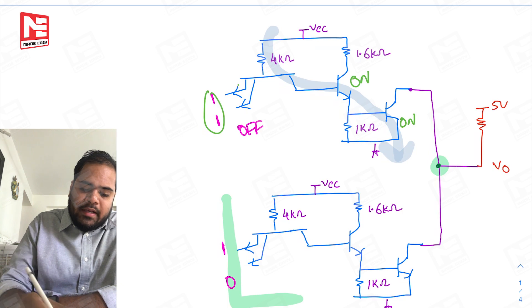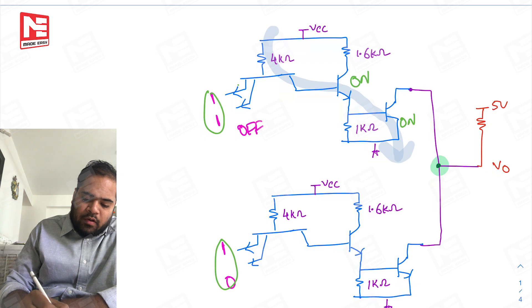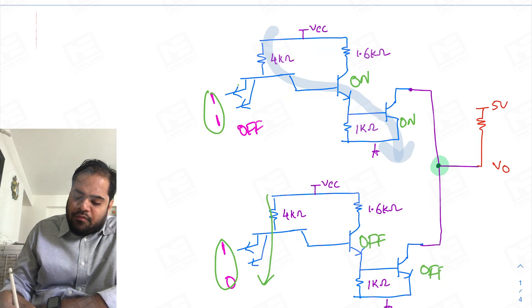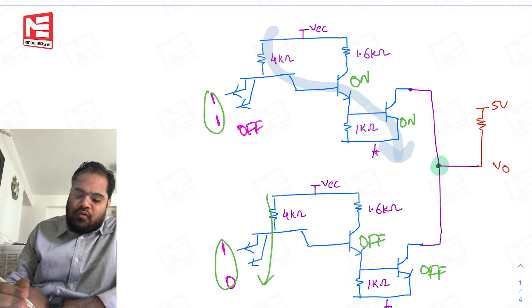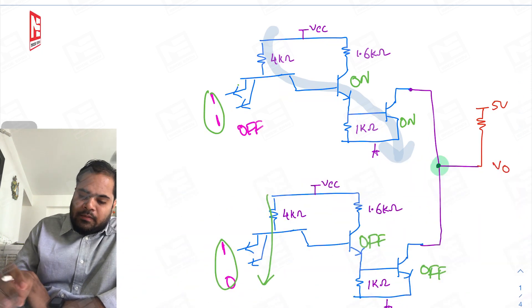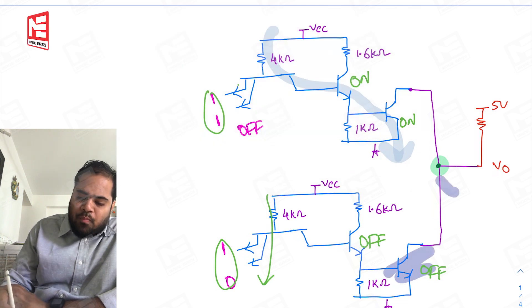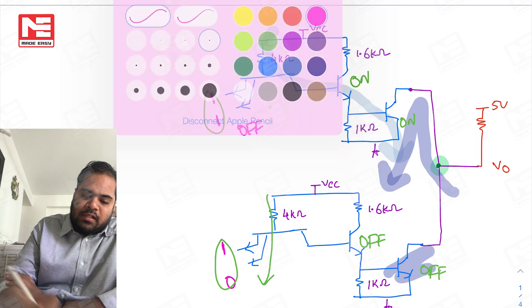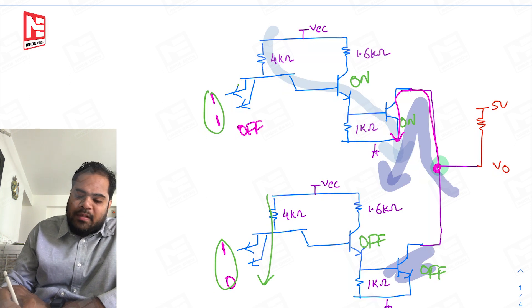These two diodes are off and the current flows in this direction. Now when I give 1 and 0 here, current starts flowing in the other direction — this transistor becomes off, and off basically stands for an open circuit. So this particular device is off, and the output is now pulled towards ground because of this connection.